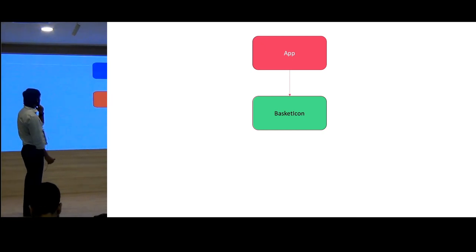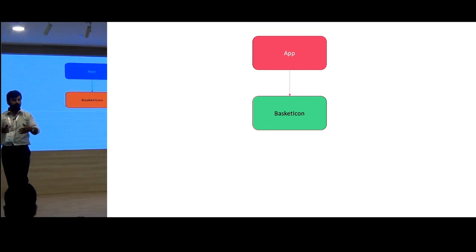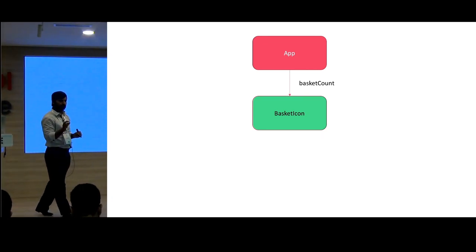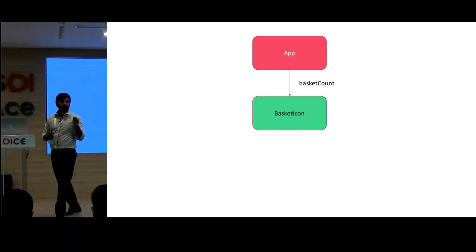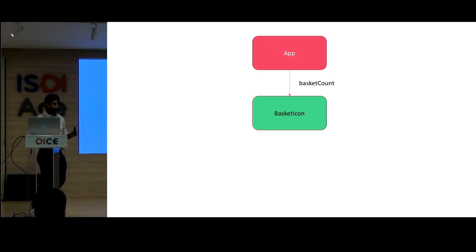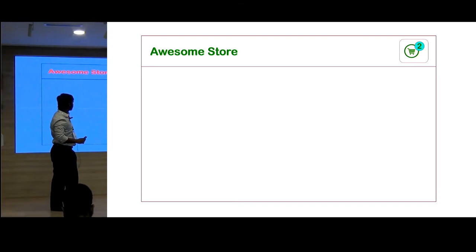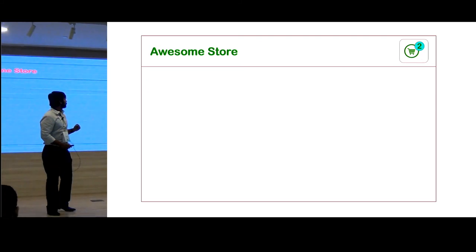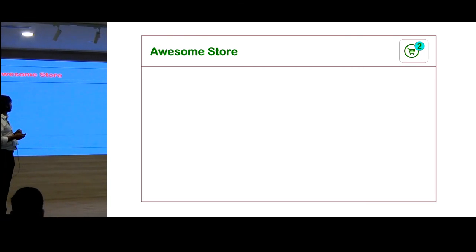Let's say this is a very simple application component hierarchy. The application component has the basket item, so the application component is wrapping the basket item. The application is responsible for getting the value - it will make a call to the REST API, get the value, and pass it to the basket component as a property. This works pretty well in a simple case.